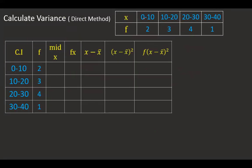First, I write the class intervals as given: 0 to 10, 10 to 20, 20 to 30, 30 to 40. For clarity, I have made it a very small sum. Then I find the mid-x: add the class boundaries and divide by 2. So 0 plus 10 divided by 2 gives 5; 10 plus 20 divided by 2 gives 15; 20 plus 30 divided by 2 gives 25; and 30 plus 40 divided by 2 gives 35. Then I multiply f and x: 2 into 5 is 10, 3 into 15 is 45, 4 into 25 is 100, and 1 into 35 gives 35.